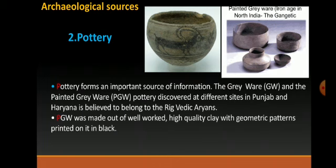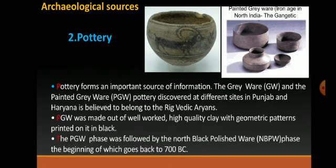The PGW phase was followed by the Northern Black Polished Ware, that is NBPW, the beginning of which goes back to 700 BC. This NBPW pottery was glossy, shining, and well-polished. It is said that these potteries were used by the upper class, showing the people who dominated the economic and social life of the period.